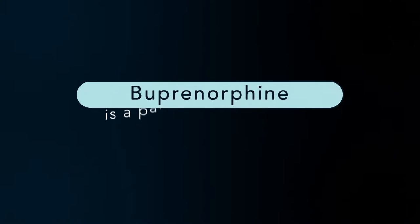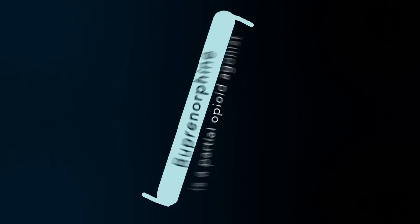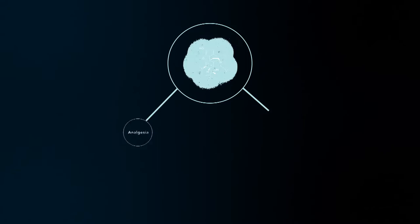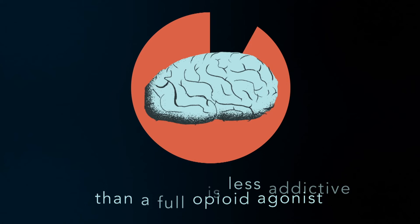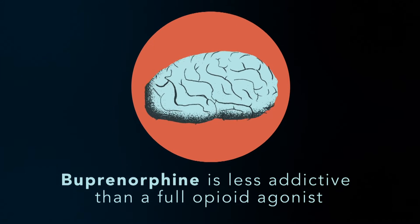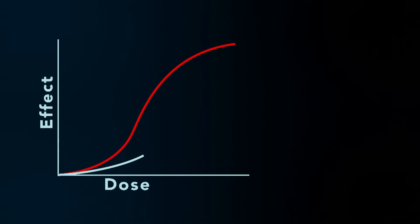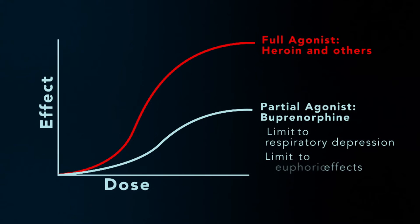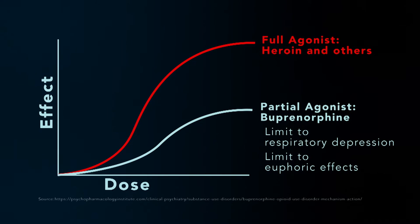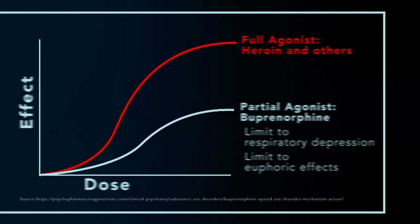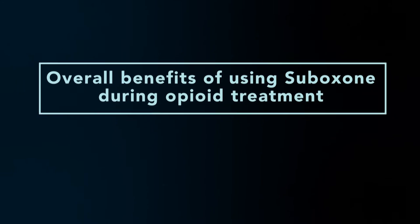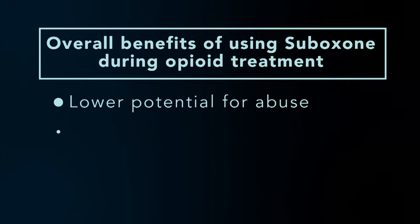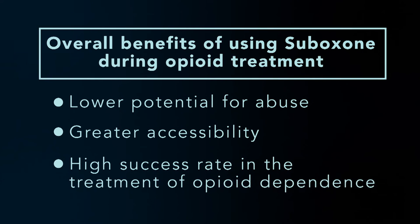The buprenorphine in Suboxone is a partial opioid agonist. As an opioid, it still produces analgesia and euphoria, but as a partial agonist, these effects are felt to a lower extent than with full opioid agonists. Furthermore, the opioid effects of buprenorphine increase with each dose increase until they reach a ceiling at moderate doses, where even if the dose is increased, the effects do not. This lowers the risk of buprenorphine being abused and of side effects, making it a vital substitute for heroin or other full opioid agonists to help individuals addicted to opioids as they begin their detoxification.